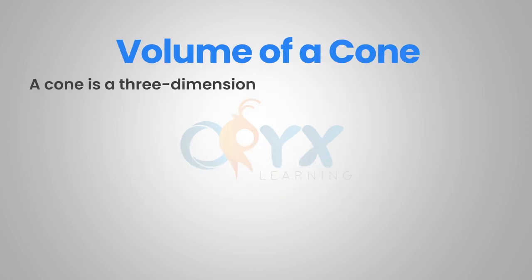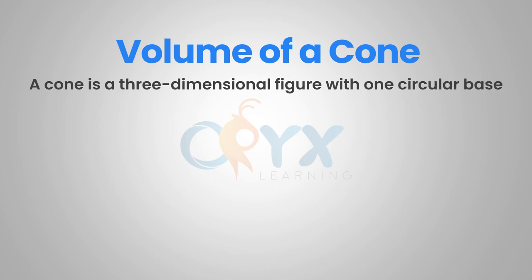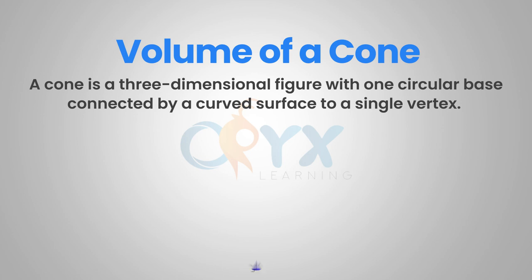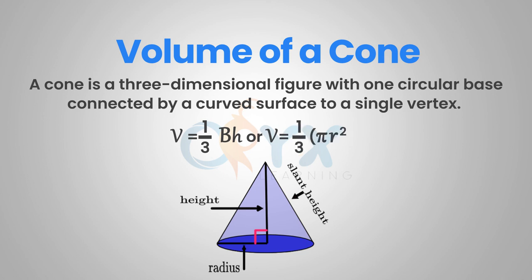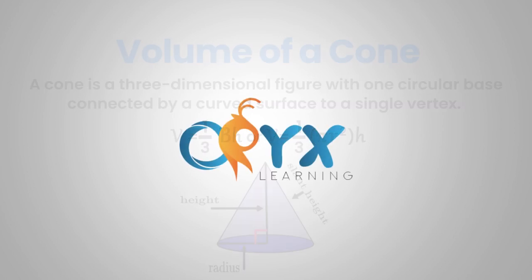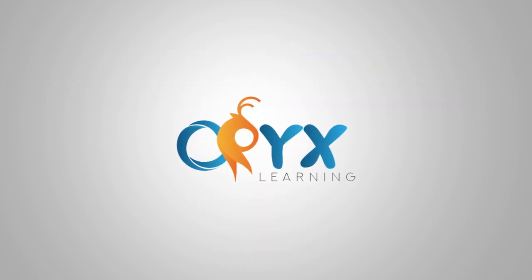So remember, a cone is a three-dimensional figure with one circular base connected by a curved surface to a single vertex. We have the radius, the height, and the slant height all labeled. Make sure to use the actual height when substituting into the formula. Our formula is V equals one-third BH, where B is the area of the base, or V equals one-third pi R squared H. That is our lesson for today. Thank you for joining us and I hope you enjoyed it.